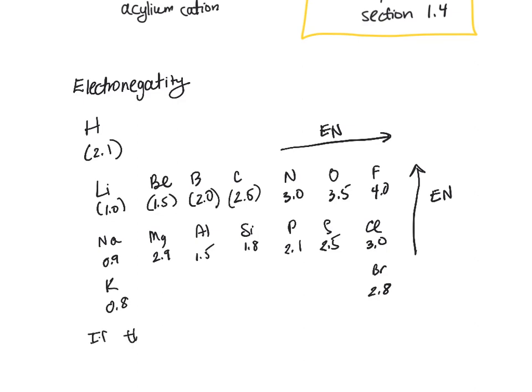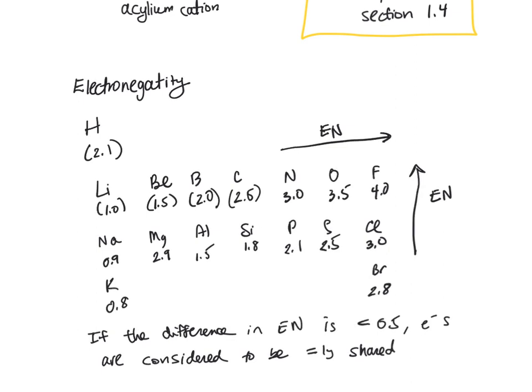If the difference in electronegativity is less than 0.5, electrons are considered to be equally shared. So again, if the difference in electronegativity is less than 0.5, bonds are considered to be shared.